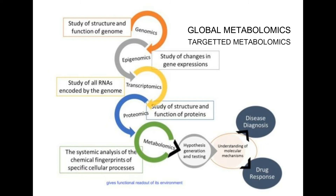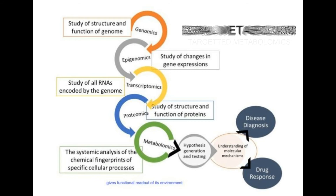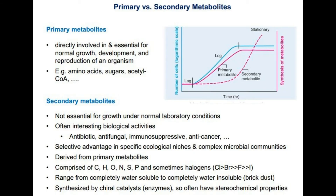The metabolite itself is the intermediate and the product of a metabolic pathway. Any small organic molecule or chemical that may be a peptide, oligonucleotide, sugar, or something that can be transferred as part of metabolic pathways can be of two particular types: either a primary metabolite or a secondary metabolite.